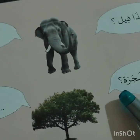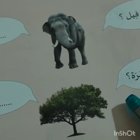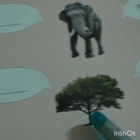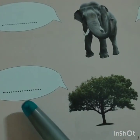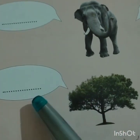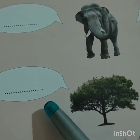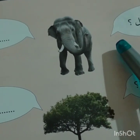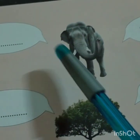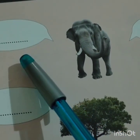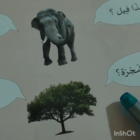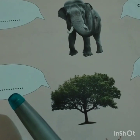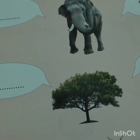HAL HAZA KITABUN? Is this a tree? Is this a tree? NAAM, hazihi shajarat. Yes, this is a tree. HAL HAZA KITABUN? Is this an elephant? Yes. NAAM, haza KITABUN. HAL HAZIhi shajarat? Is this a tree? NAAM, hazihi shajarat.